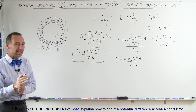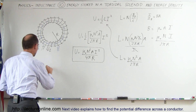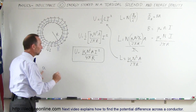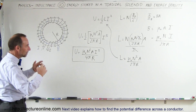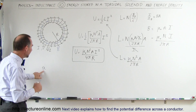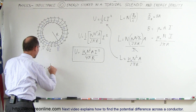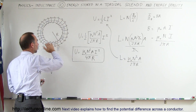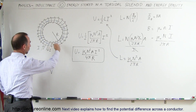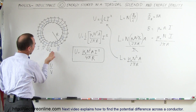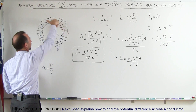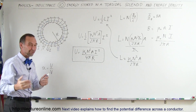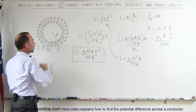Now, what about energy density? Energy density is, by definition, represented with a small letter u. If capital U is the total energy inside a solenoid or magnetic field, then the energy density is the total energy divided by the volume. The energy is contained within the toroidal solenoid — if you curl your fingers in the direction of the current, your thumb points in the direction of the magnetic field, which goes around the torus.